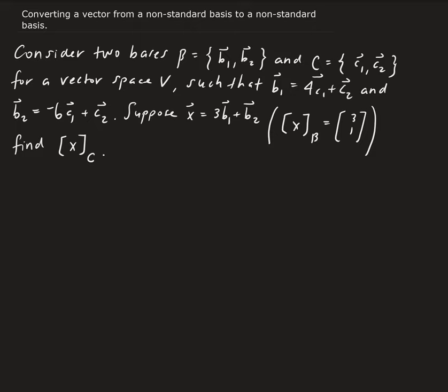So let's consider that we have two bases, where beta, the first set, beta is composed of vectors b1 and b2, and the second basis is C, which is composed of c1 and c2, and both of these are in a vector space V.